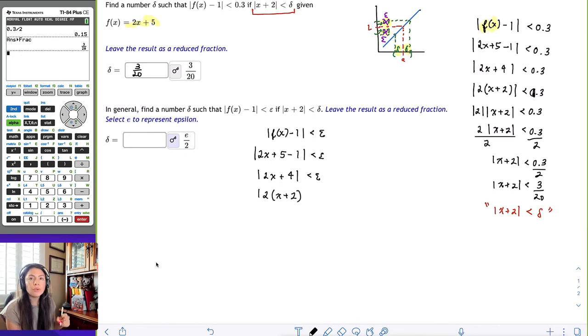Then I get the 2x plus 4 as I did before. I factored out the 2. And I know the absolute value of a product is the product of the absolute values. So I know this 2 is going to come out and I'm going to have |x + 2| less than epsilon.